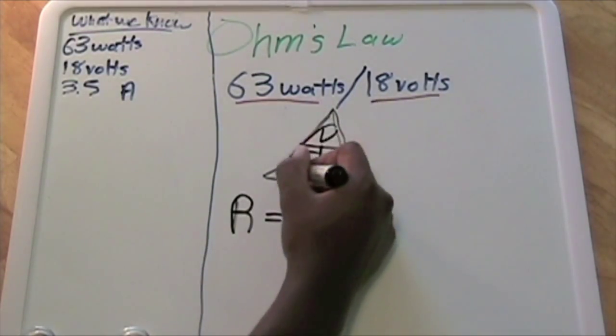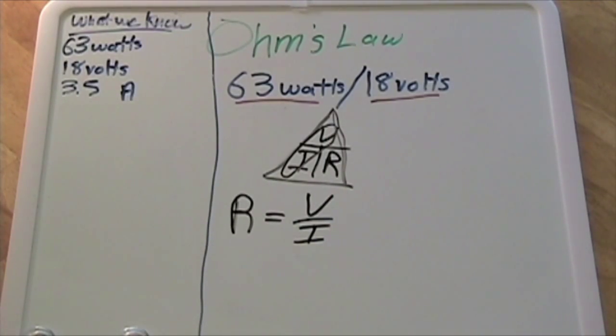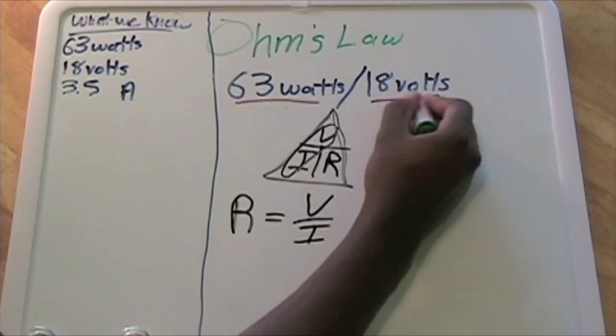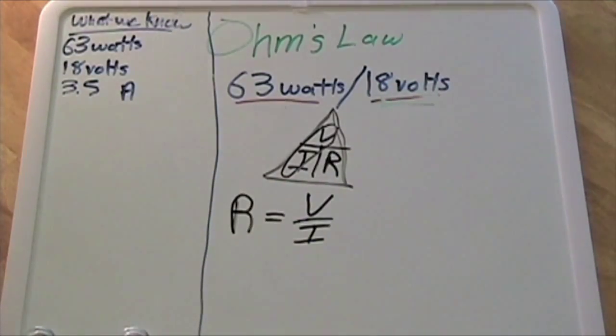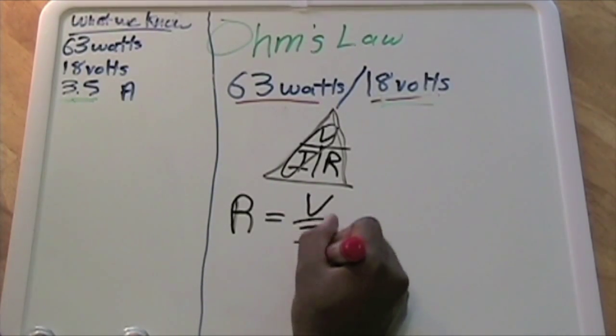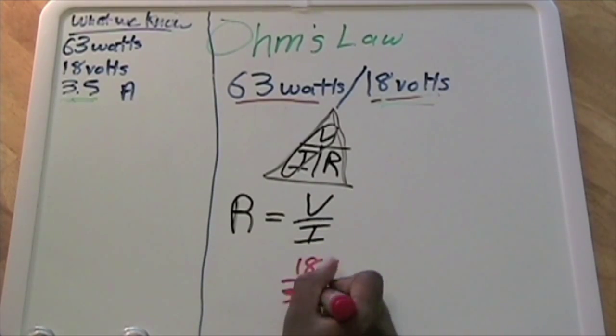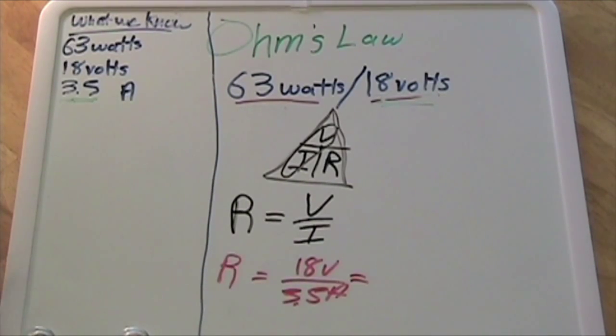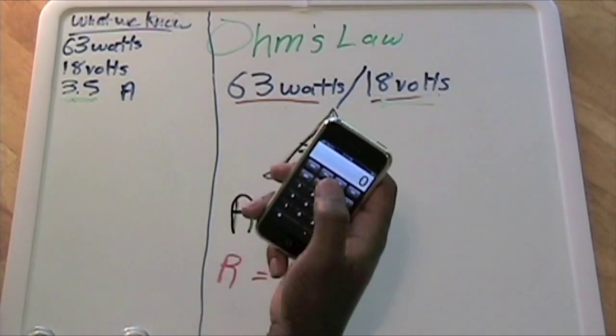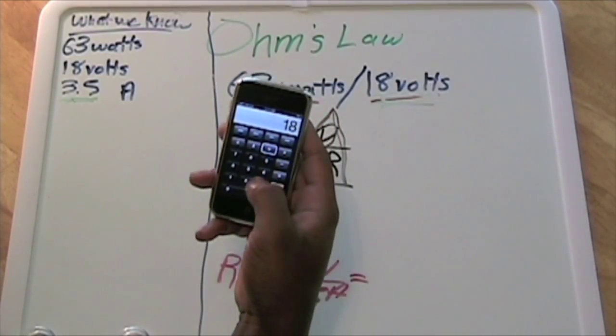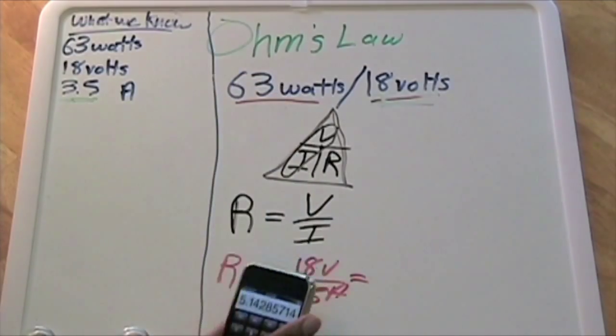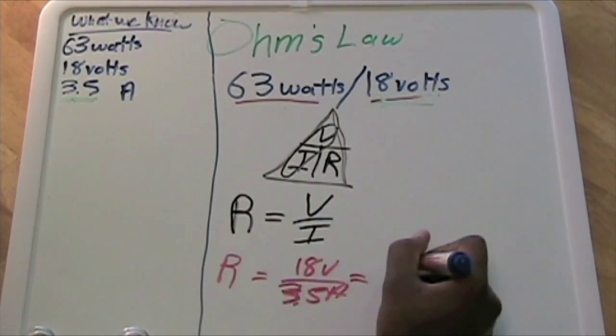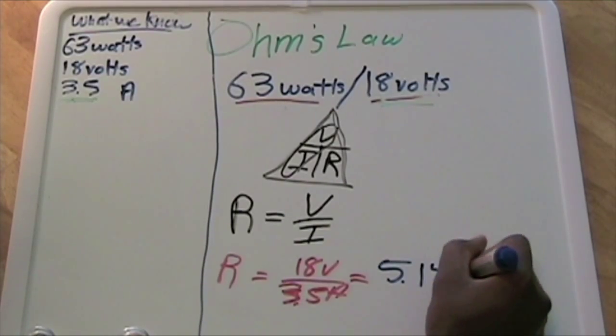Plugging in our values, we know our voltage now which is 18 volts, and we know our current which is 3.5 amps. We're going to have 18 volts divided by 3.5 amps. Putting that in our calculator, 18 divided by 3.5 equals 5.14 ohms.